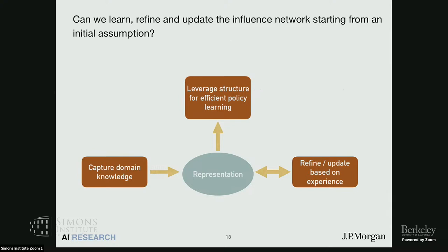This really opens up the question of whether we can start with some assumption about the influence network and then update this assumption based on experience. I want to end with this diagram, because this is really what we are trying to achieve: explicit representations where we can capture human domain knowledge about the problem, leverage it for more efficient learning, and also refine and update this representation based on experience. Thank you.